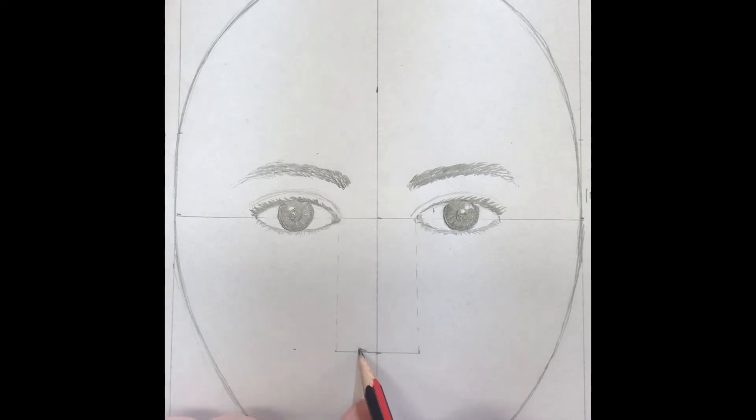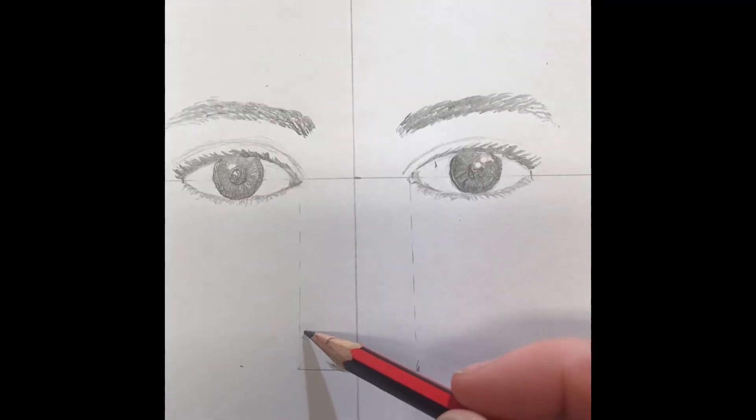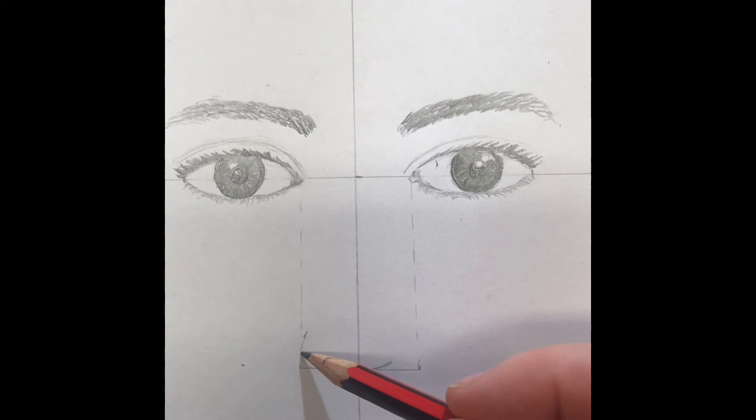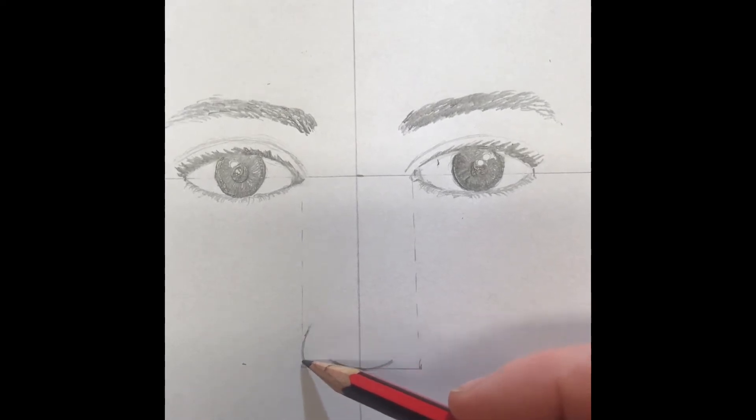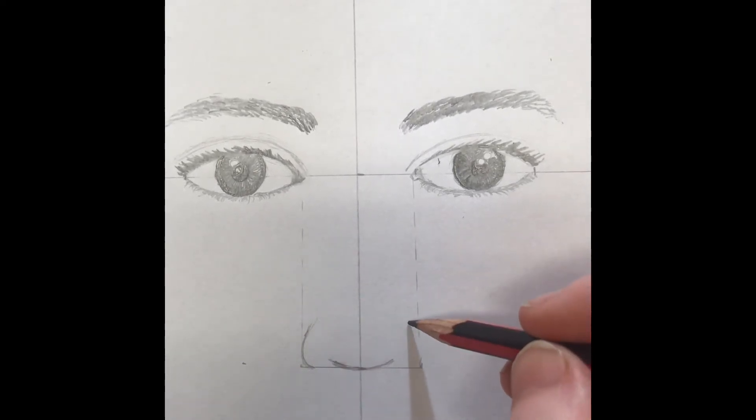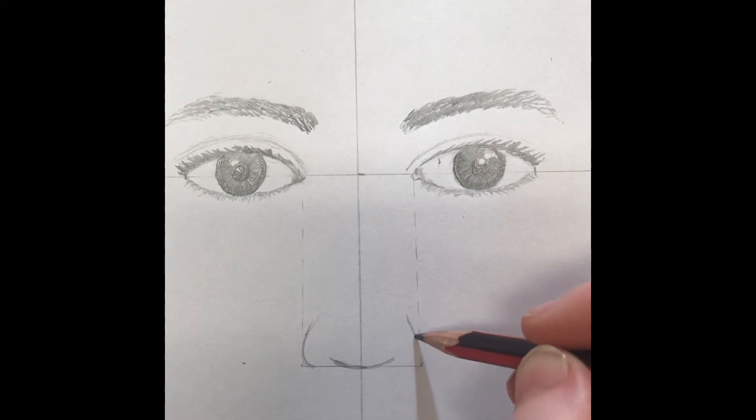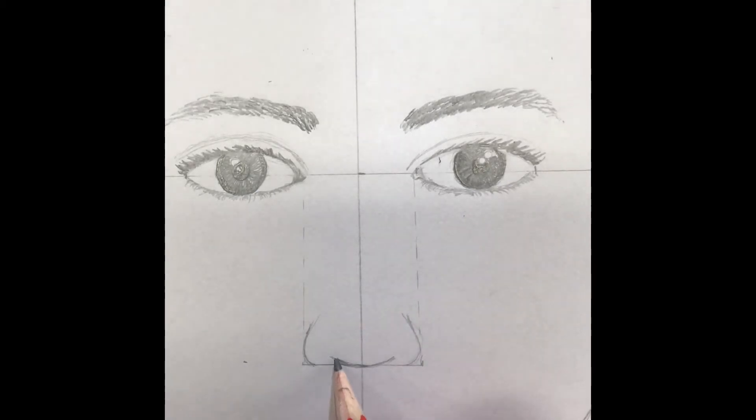At the middle intersection, you want to draw a slight curve. Then you need to draw two lines at either side of the nose curving upwards. Watch carefully how I join these two curves together with two smaller curves.